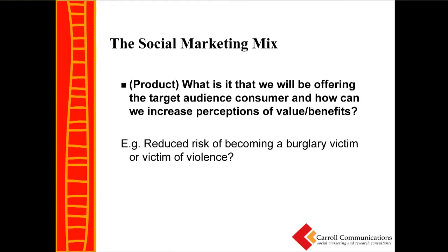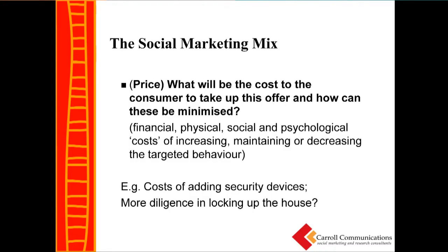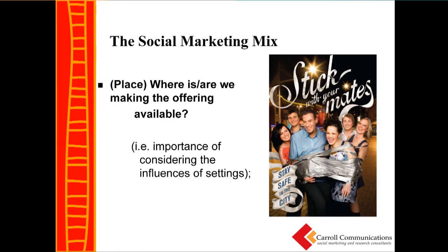In terms of the social marketing mix and strategy formulation — what is it that we are going to be offering? If we are saying something like the reduced risk of becoming a burglary victim or a victim of violence, we've got to think clearly about what benefits we can promote based on what we've learned from engaging with the target audience and their current attitudes and perspectives, that are going to be realistic in terms of promoting this behaviour. What is the price in terms of financial, physical, social, and psychological costs of increasing, maintaining, or decreasing the targeted behaviour? If it's the burglary example, there's going to be some financial cost possibly of adding security devices, and people are going to be more diligent in locking up their houses.